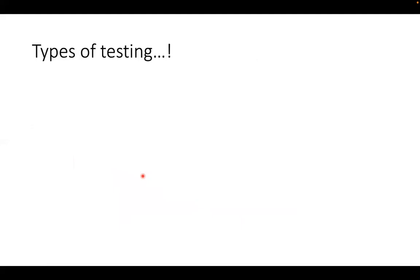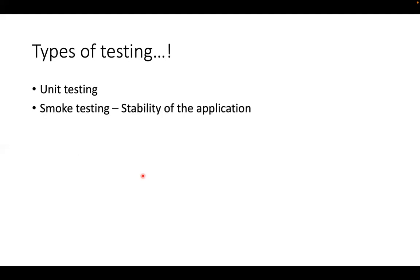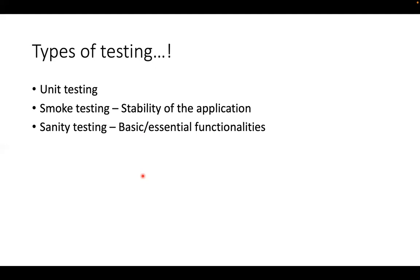There are different types of testing. Unit testing is when a developer tests their own code using a piece of test code. Smoke testing just verifies the stability of the application. Sanity testing is done when there is a major change — before starting full testing we verify the basic or essential functionalities. For example, when testing a shopping or banking application, I first test the login functionality as sanity testing because without it we can't proceed. Functional testing focuses on all the changes made in the application, including new features.